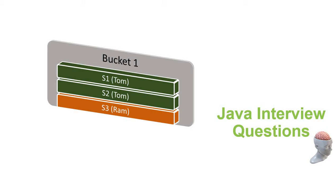So it is straightforward. Contract number one says when two objects are equal, the hashCode must be equal. Contract number two says when the hashCodes of two objects are equal, that doesn't mean those two objects need to be equal — that is not mandatory.